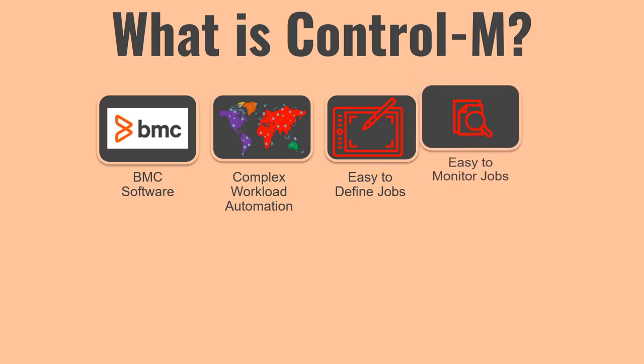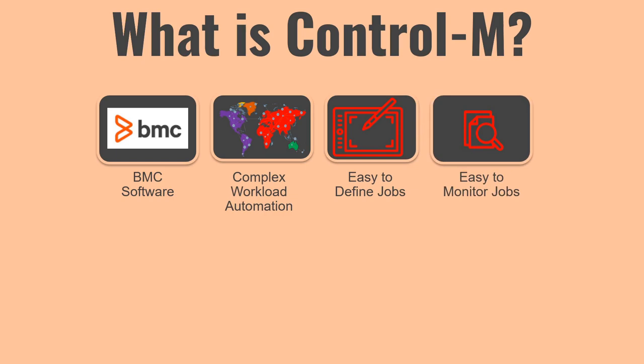Once you define and execute jobs, it is very important to monitor them and ensure whether a job is running as per expectation. That is usually taken care of by the L0 or knock team in organizations. Control M provides an easy interface to monitor all the jobs. Using that interface you can perform many actions — for example, if a job fails, you can view the logs, see the output of the execution, and if you want to rerun that job, you have the option to do that as well.